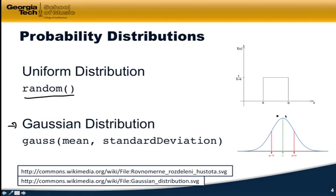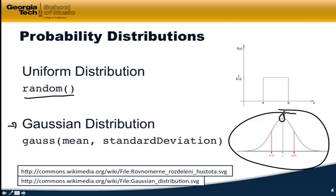You've probably seen something like this bell curve before, where you have a central value that's maximally likely to come back, and then a slope outward from there. As you get toward the edges, values become decreasingly likely. So you're very unlikely to get the extreme values, and very likely to get values near the center.